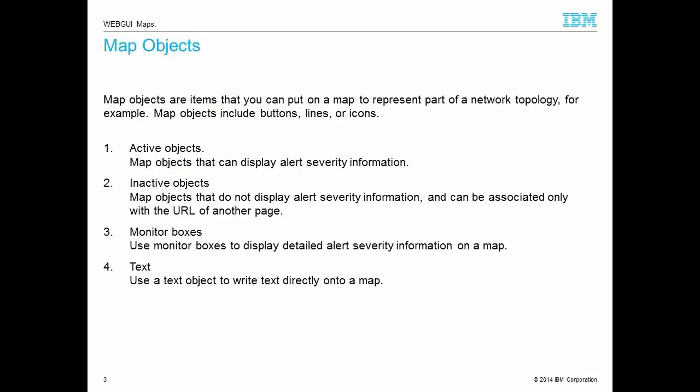Map objects are items that can be used to create a map. There are different types of objects you can place on the map. For example, active objects, inactive objects, monitor boxes and text.